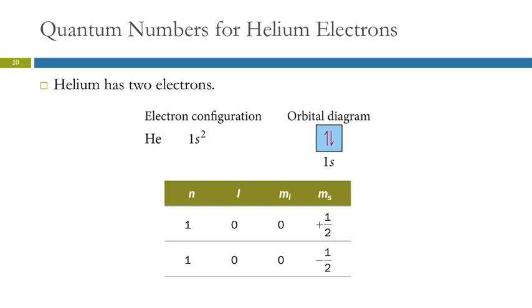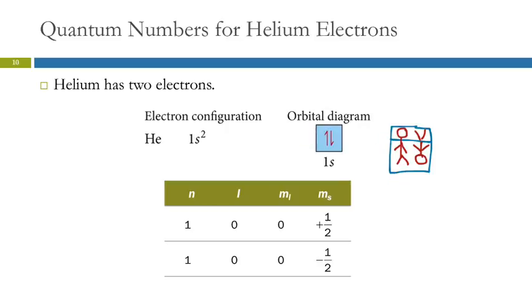I really like using the quantum hotel analogy for orbital diagrams. The orbital is a bed. The first electron comes in and lays down right side up — by convention the first arrow points up. The next electron has to sleep in the same bed, so he sleeps upside down. That's the idea of opposite spins — we're just representing them as sleeping upside down together in the same orbital.